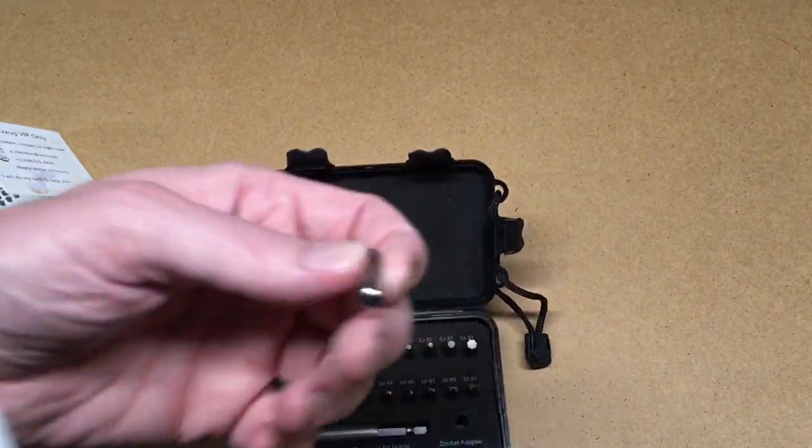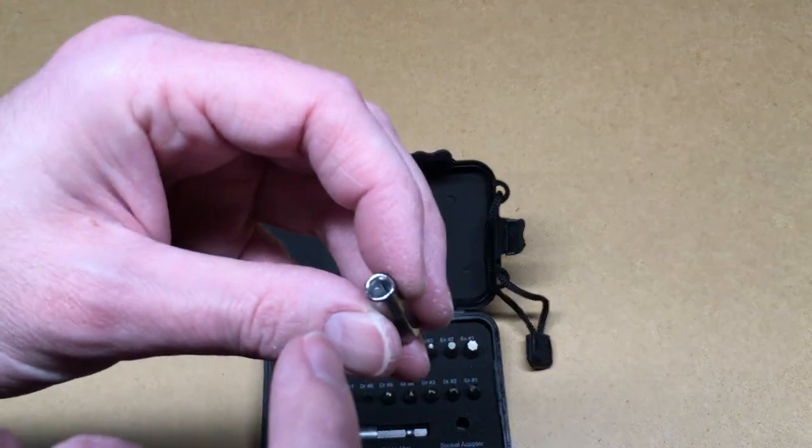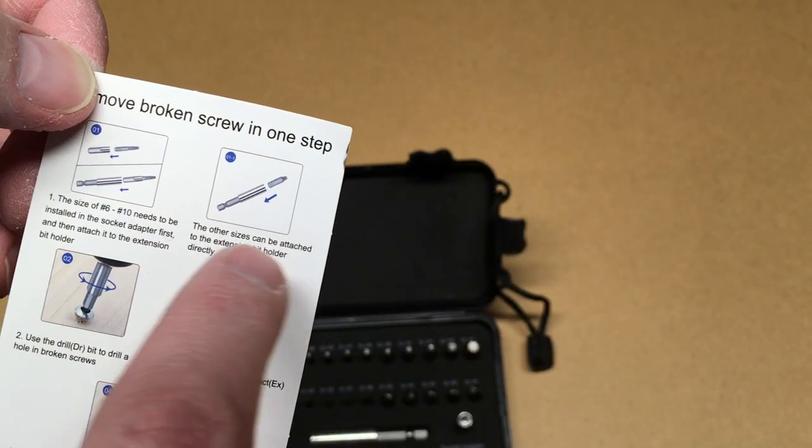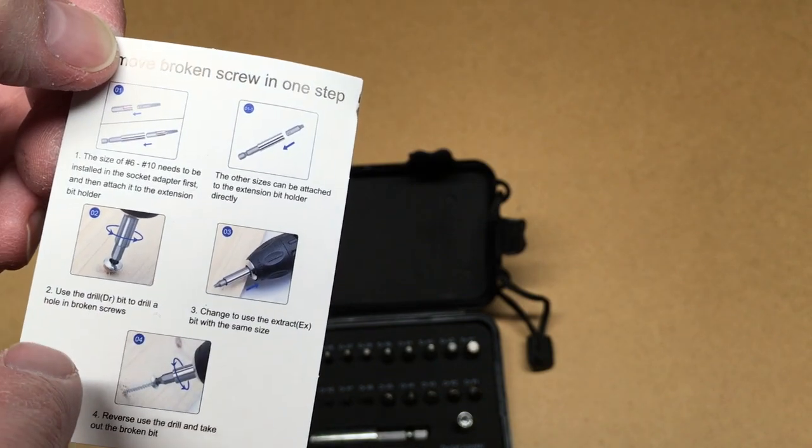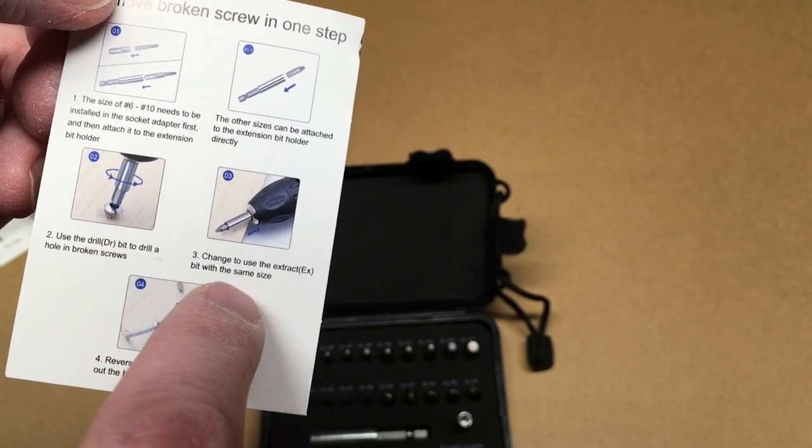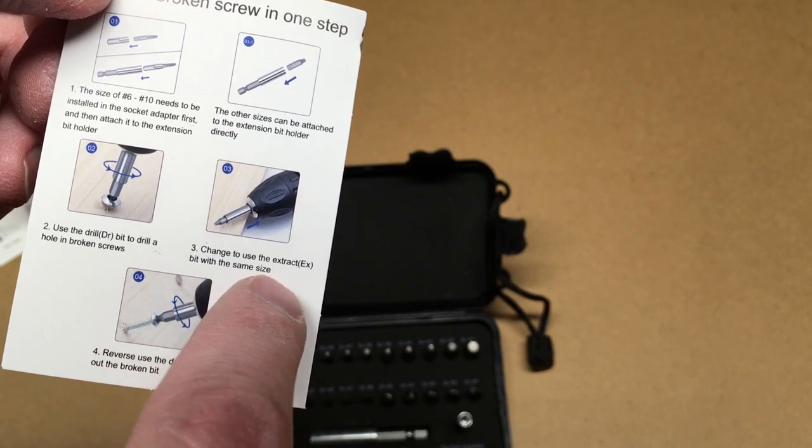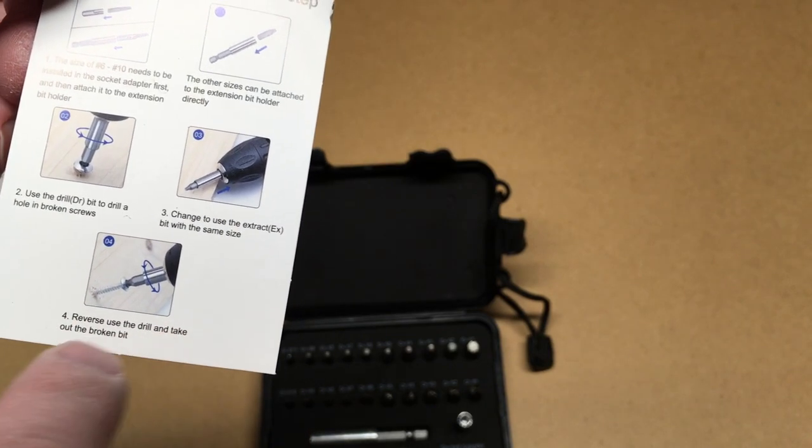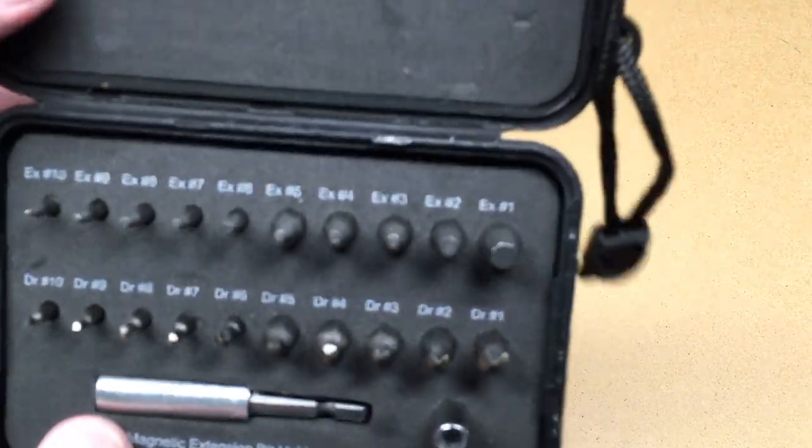It comes with a socket adapter for the little bits. The other sizes can be attached to the extension bit holder directly. Use the drill bit to drill a hole in the broken screw, change to the extractor bit with the same size, reverse the drill, and take out the broken bit. Let's take a look at this.